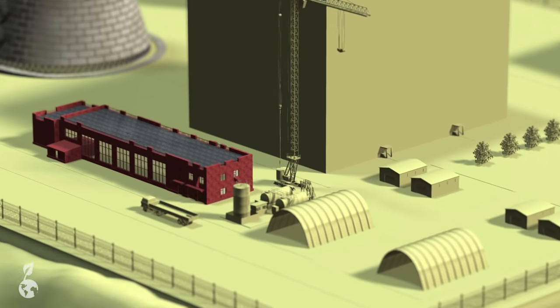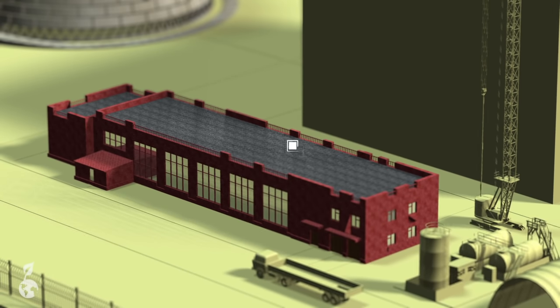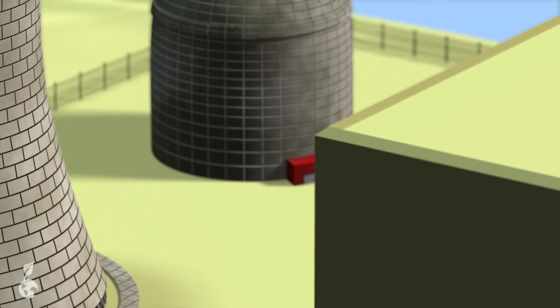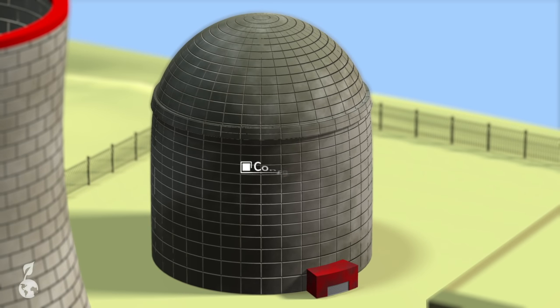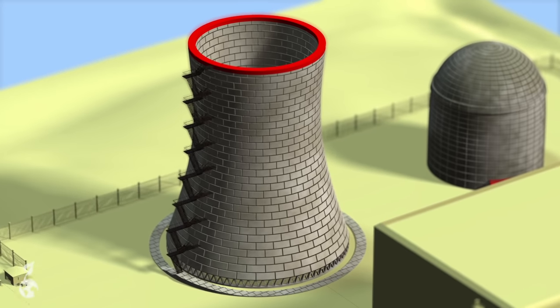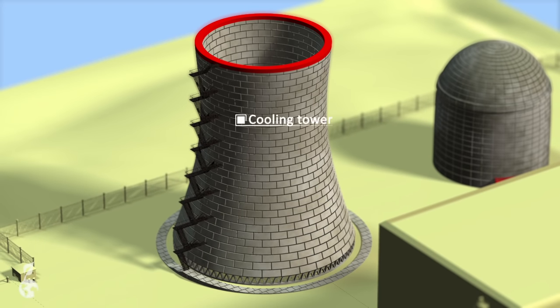The turbine building houses several turbines as well as the generator necessary for electrical power generation. The containment building, where the nuclear reactor is housed, is made of meter-thick reinforced concrete. Inside this building, nuclear reactions take place where water is heated up.